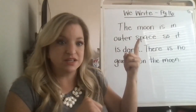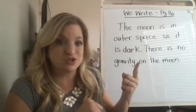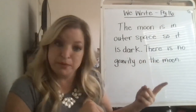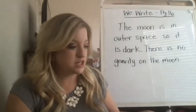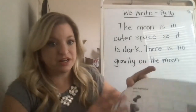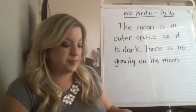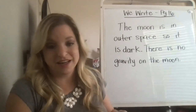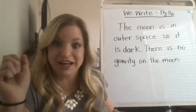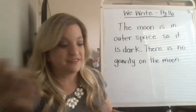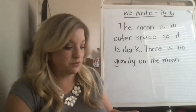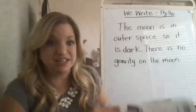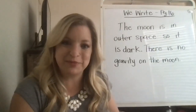So it says: the moon is in outer space, so it is dark. There is no gravity on the moon. You could write something you remember about the moon from the reading yesterday. That's really what they said in the story — no gravity because they're bouncing, they're light as air, and it's totally dark there. Good luck! You're on page 16 doing We Write. Bye, boys and girls.